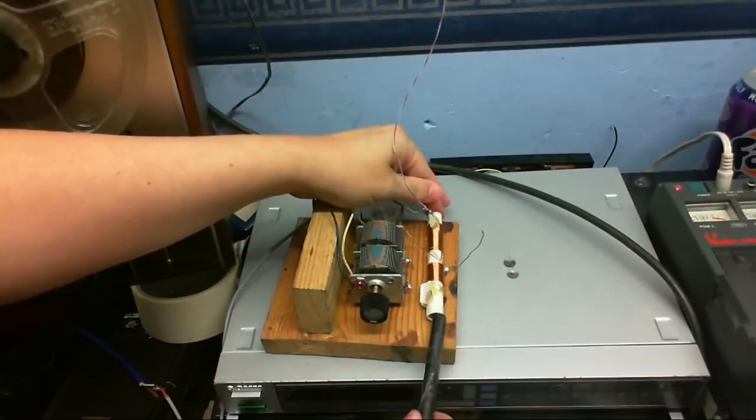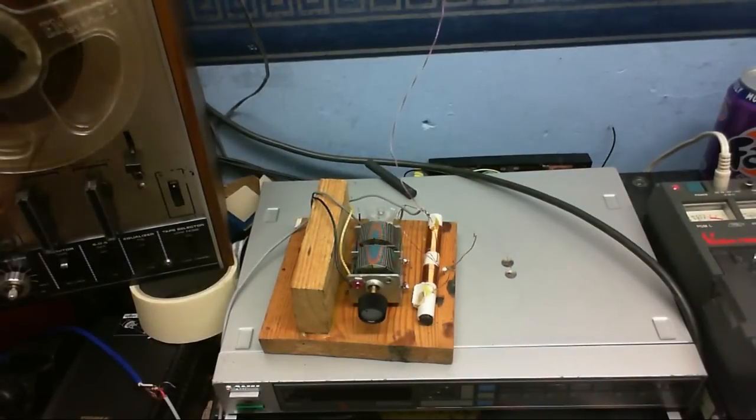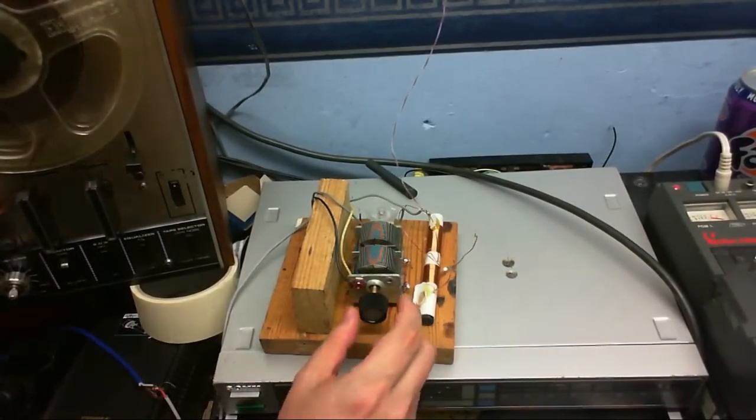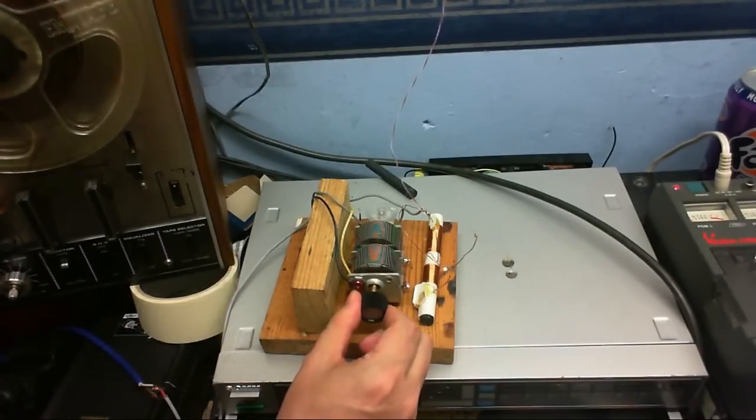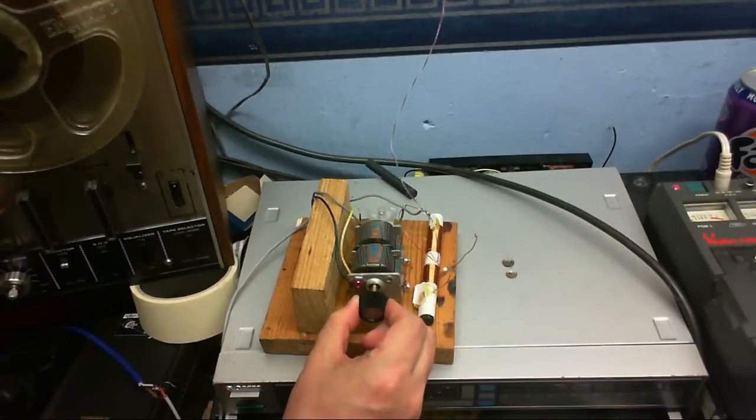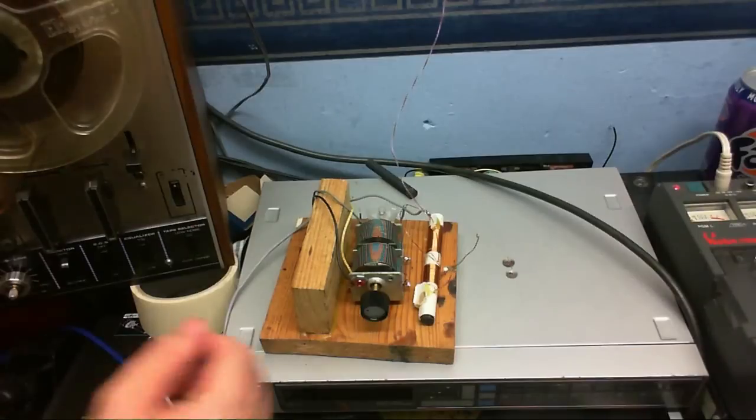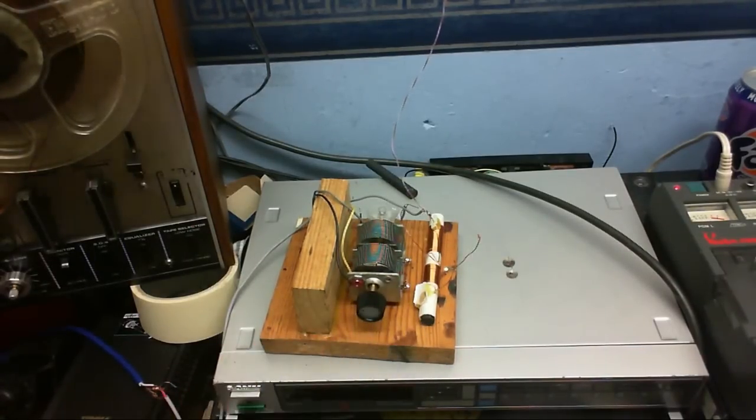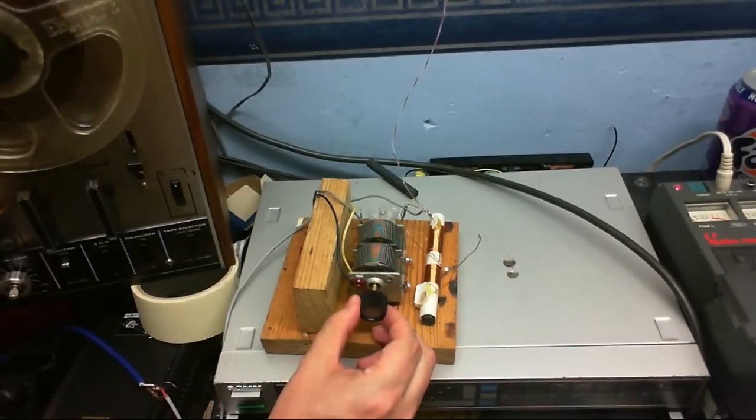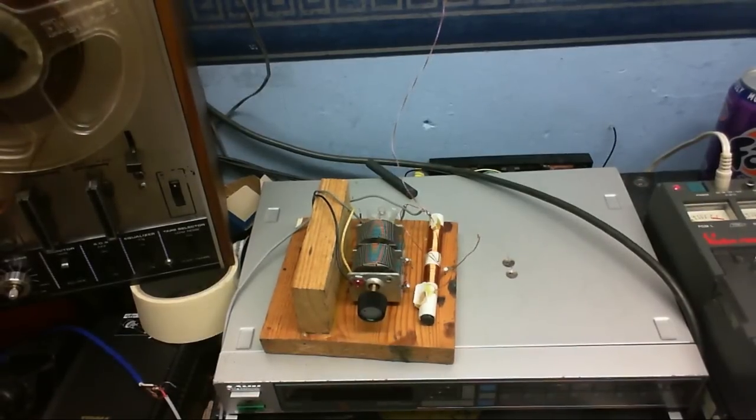Now let's put the ferrite bar in and see what else we can get. I tried this earlier, couldn't get anything, but let's just do that anyway. Still get nothing over there. Pretty much nothing over here. I think there might be something very very faintly coming in right about here. Might be able to hear it, but it's about the best I can get it.